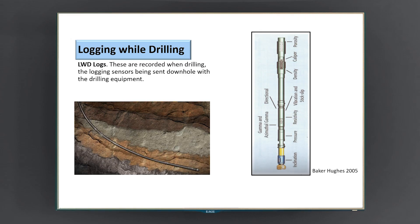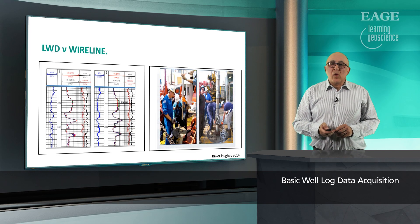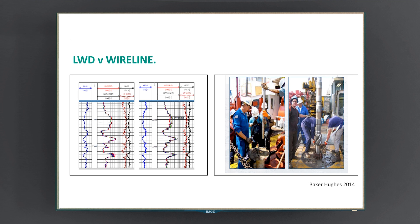Logging while drilling. These logs are recorded while drilling. The drilling sensors are sent downhole with the drilling equipment. You can see on the right-hand side a diagram of the drilling bits at the bottom and all the measuring devices from up from there. LWD versus wireline — this slide shows how similar both operations are. The wireline tool is actually much thinner and shorter, while the LWD is a very robust, thick assembly of casing.